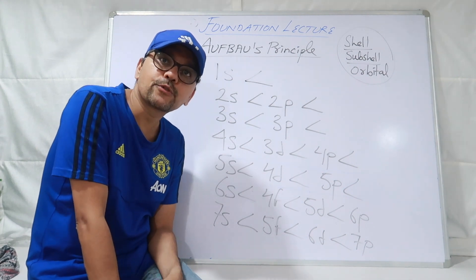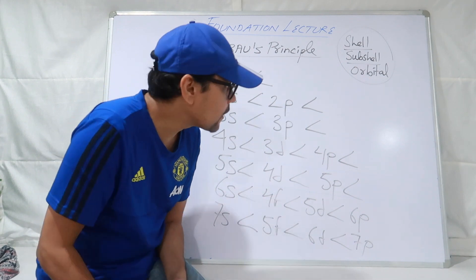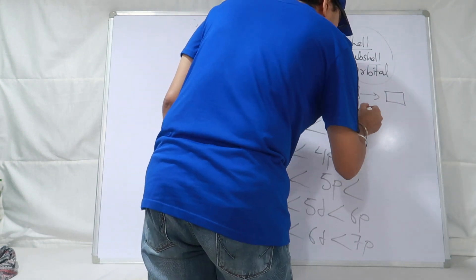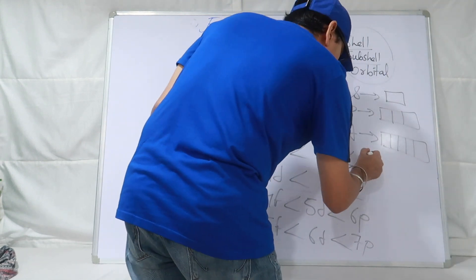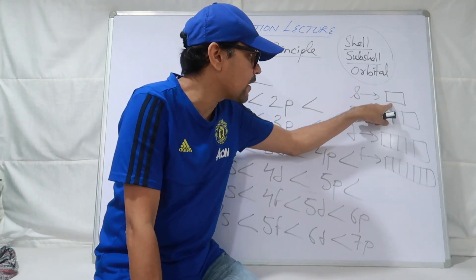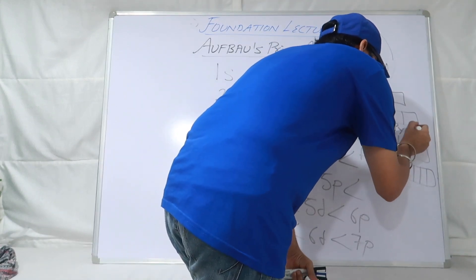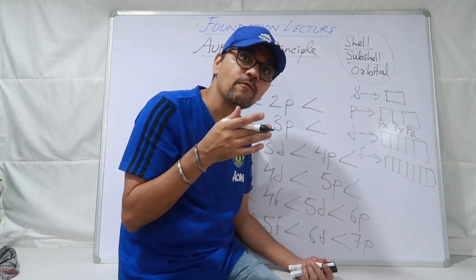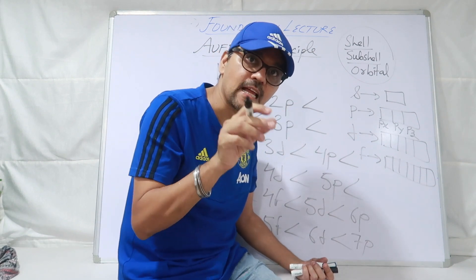SPDF — you can call it sub-shell or orbital. Sub-shell, aur sub-shell kisme divide hote hain baad mein? Orbital mein. Yaad rakho: S is having one orientation, P is having three orientations, D is having five orientations, and F is having seven orientations. S sub-shell has one orientation — isko aise bolte hain. P has three orientations: Px, Py, Pz — ek dabba matlab ek orbital, ek orientation means in which direction the electron may be present, in which axis the electron is present.